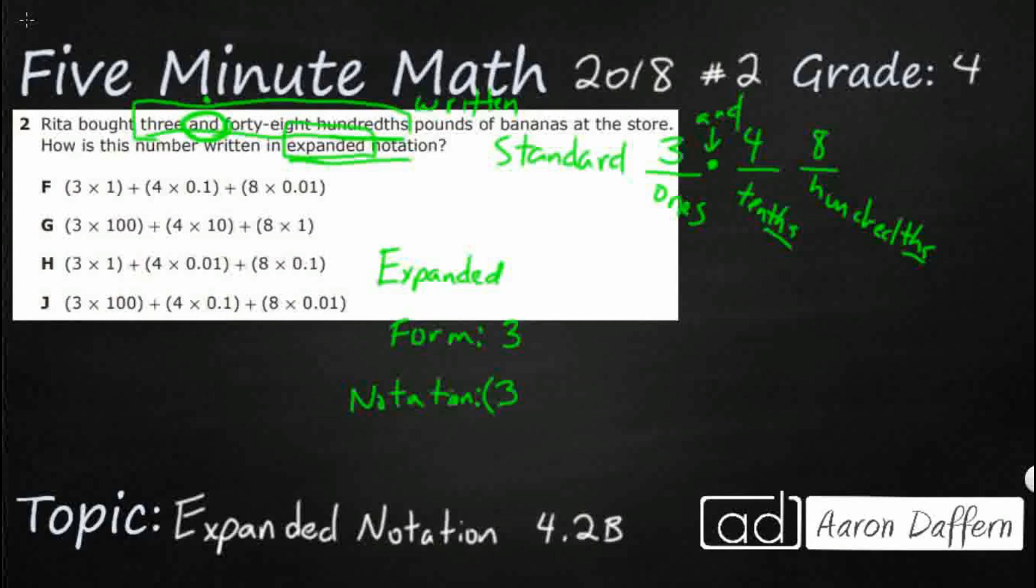In the one's place, we're going to multiply it by one. Our second number, our second factor, is always going to be the place value. So three times one still equals three, but what expanded notation does is it does a better job of showing you the place value because you can always know the place value based on whatever that second factor is.